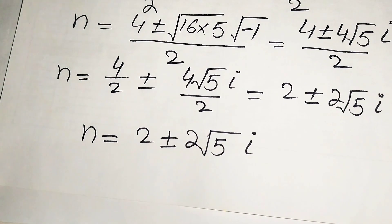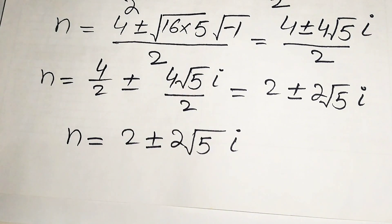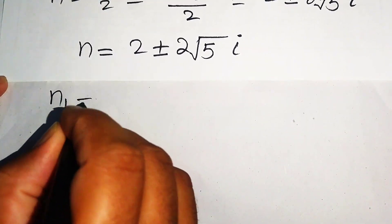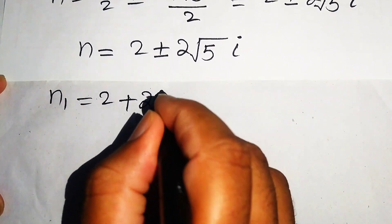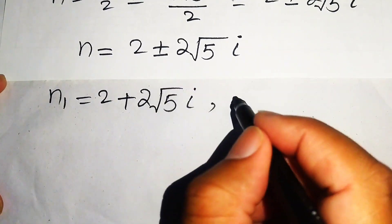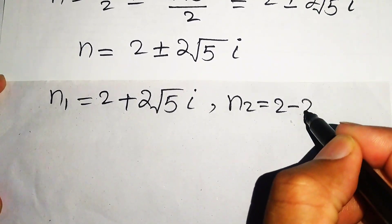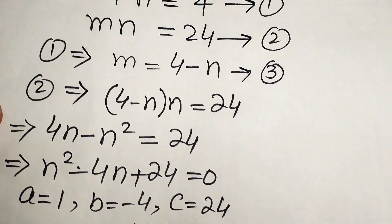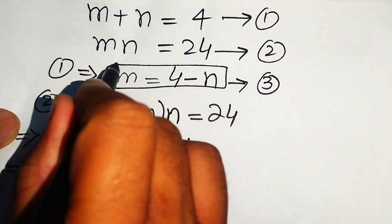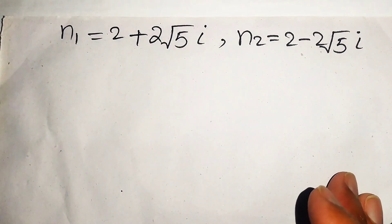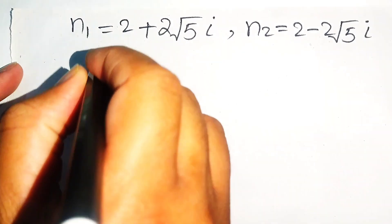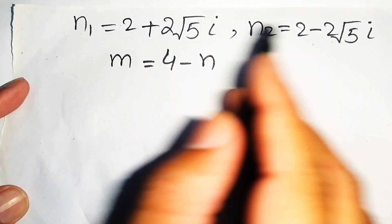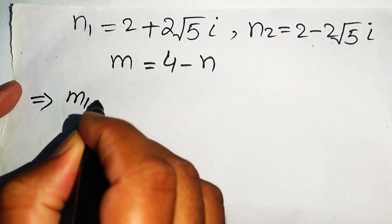Now we find the corresponding values of m. We write n1 equals 2 plus 2 root 5 i, and n2 equals 2 minus 2 root 5 i. We substitute each into equation number three, which is m equals 4 minus n, to find m1 and m2.